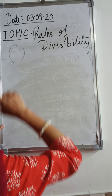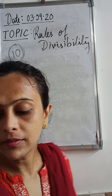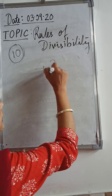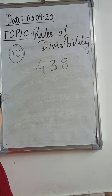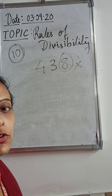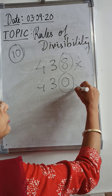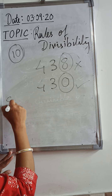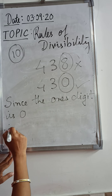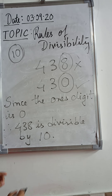For divisibility by 10, it is very easy. The ones digit of the given number must be 0. Take 438 — the ones digit is 8, not 0, so it is not divisible by 10. Take 430 — the ones digit is 0, so it is divisible by 10. You can write the reason: since the ones digit is 0, therefore 430 is divisible by 10.